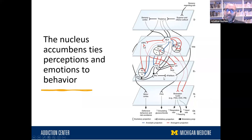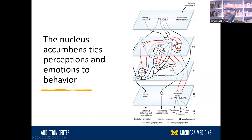If you add dopamine into this system, particularly at the nucleus accumbens, what that does is bind all of those associations and decisions together so they get stronger, such that the next time you encounter that beer bottle, you're going to be more likely to have the same emotions and memories come up, more likely to make the same decision, and have the same outcome.